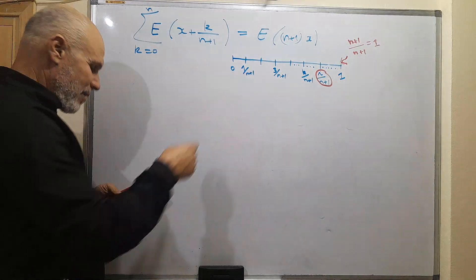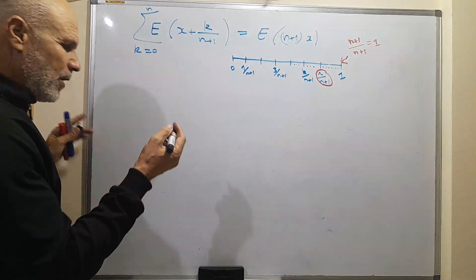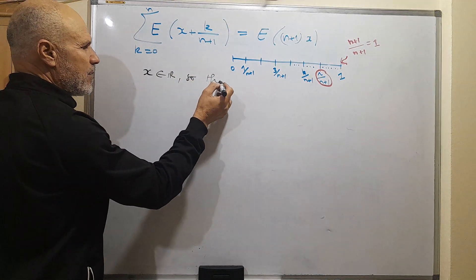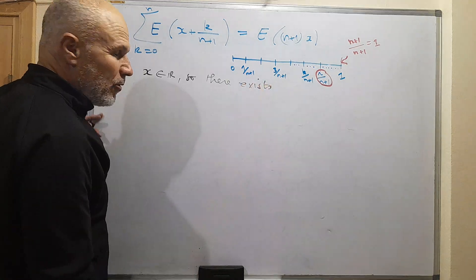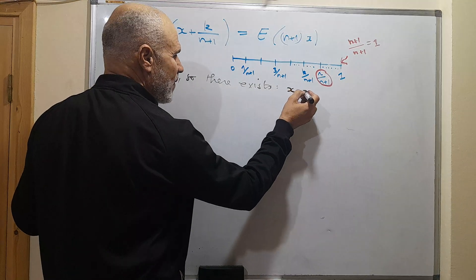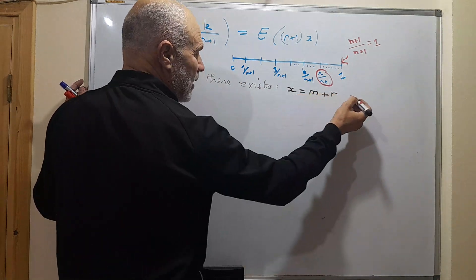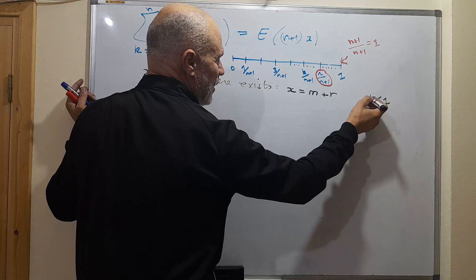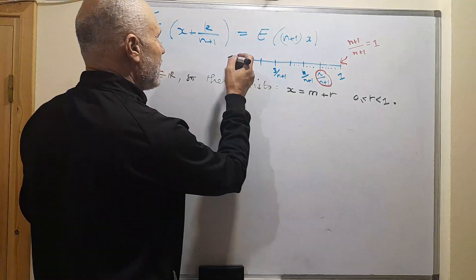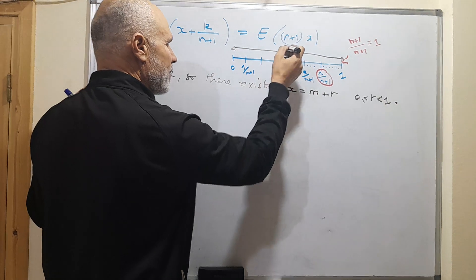I will need this segment later. Since x is a real number, there exists an integer part M and a remainder r such that x equals M plus r, where r is greater than or equal to zero and strictly less than one. So r is in the interval [0, 1).